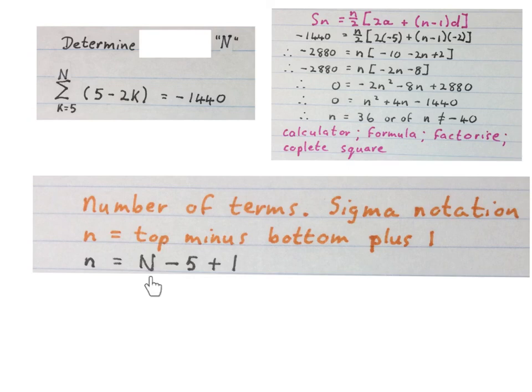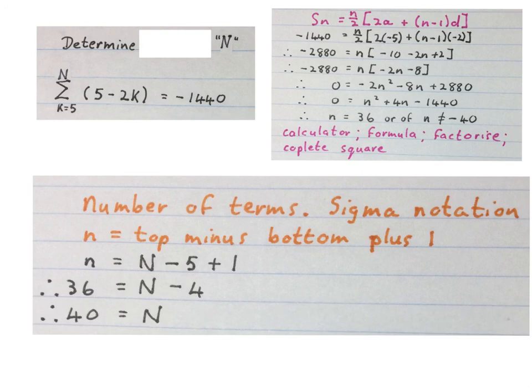Which you might want to write like this. Then we have 36 equals n minus 4. Then capital N is 40. Our final answer.